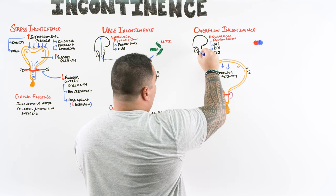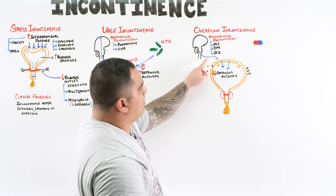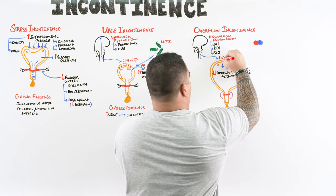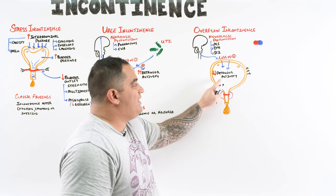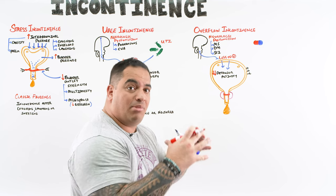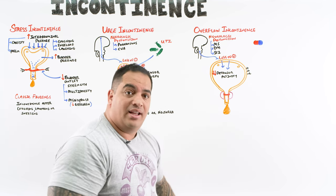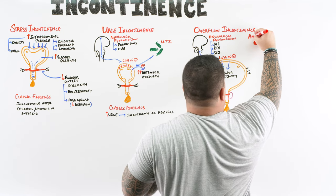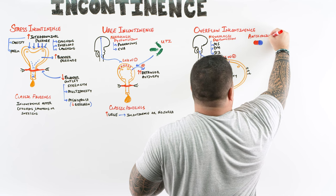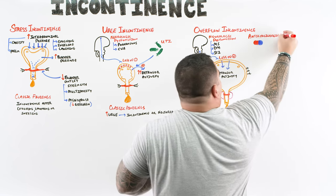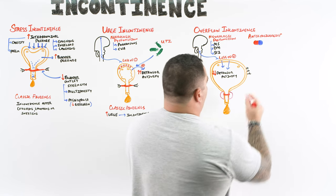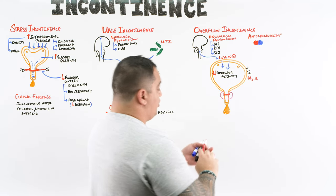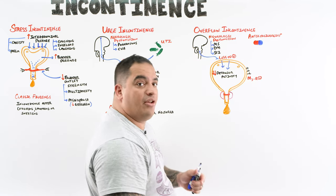In overflow incontinence from neurological causes, you lose modulatory/stimulatory function to the detrusor, reducing its activity. With decreased contractions, the bladder can't generate enough pressure to overcome bladder outlet resistance and push urine out. Medications — particularly anticholinergics — can also cause this; drugs like oxybutynin, tolterodine, and solifenacin inhibit the muscarinic M3 receptor.